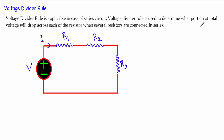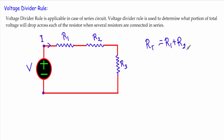Let me clarify this. Look at this circuit — we are supplying it with a source of value V. As the circuit is closed, we get a current I, and we have three resistors R1, R2, and R3. Now let me calculate the total resistance RT with respect to these two terminals. Since the resistors are in series, RT will be equal to R1 plus R2 plus R3.